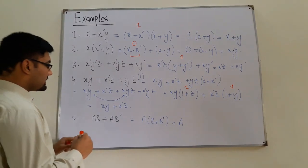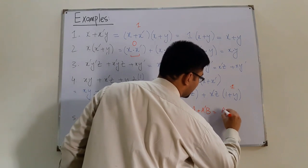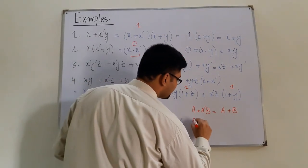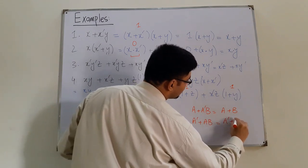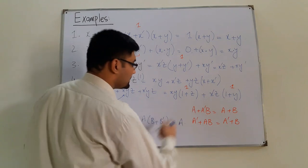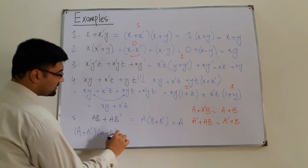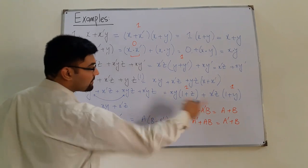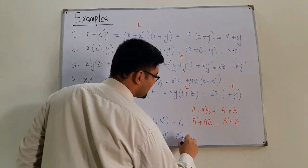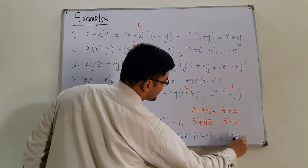Let me tell you about this formula: a plus a complement b is equal to a plus b. And another one: a complement plus a b equals a complement plus b. From the distributive law, a plus a complement into b equals (a plus a complement) times (a plus b). And a plus a complement equals 1, so 1 times (a plus b) is a plus b. Similarly, a complement plus (a into b) equals (a complement plus a) into (a complement plus b), which equals 1 into (a complement plus b), giving a complement plus b.